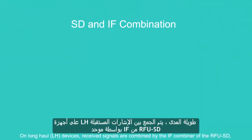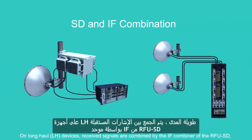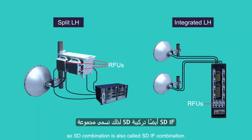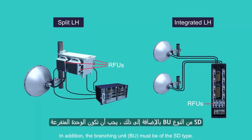On long-haul LH devices, received signals are combined by the IF combiner of the RFUSD, so SD combination is also called SD-IF combination. In addition, the branching unit, BU, must be of the SD type.